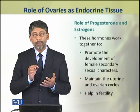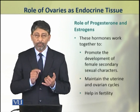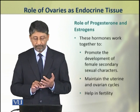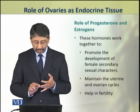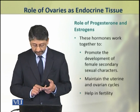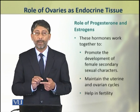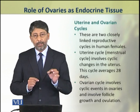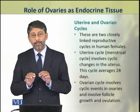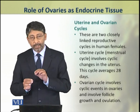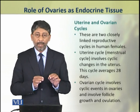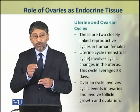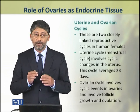We shall discuss the role of progesterone and estrogen in detail. These hormones work together to promote the development of female secondary sexual characters. They also maintain the uterine and ovarian cycles and help in fertility of the female. We shall discuss in detail the role of these two hormones in the uterine and ovarian cycles, which are two linked reproductive cycles in human females.